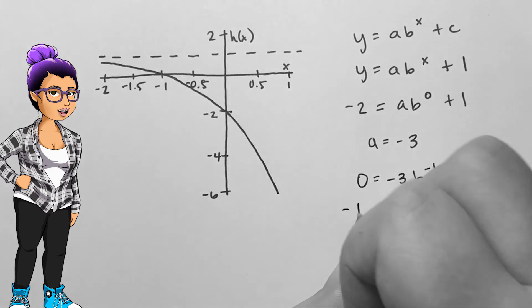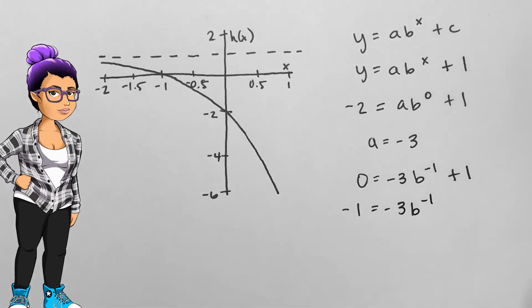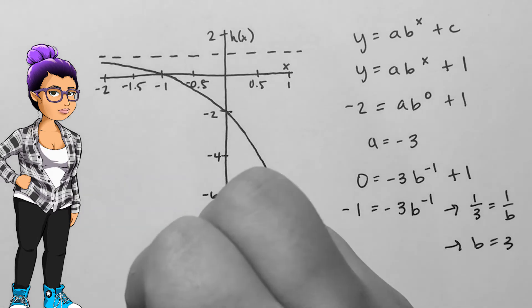Now I can use another point to find the b value. Since the x-intercept is almost certainly negative 1, 0, we'll use that. I get a b value of 3.